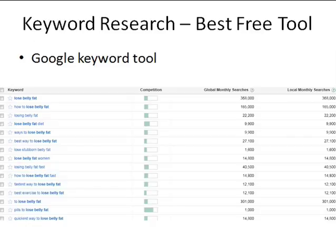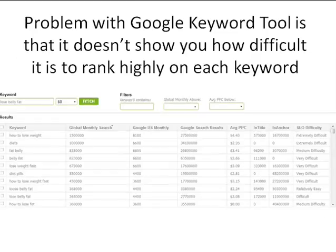When it comes to keyword research, probably the best free tool available is the Google Keyword Tool. If you type a phrase like 'lose belly fat' into it, it'll give you a bunch of keywords with global monthly searches, local monthly searches, and a rough estimate of competition in Google AdWords. But the problem with the Google Keyword Tool is it doesn't show you how difficult it actually is to rank highly on each keyword in the natural search engines — and that's where Traffic Travis is really helpful.